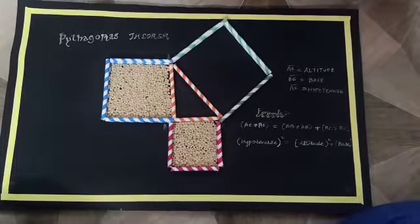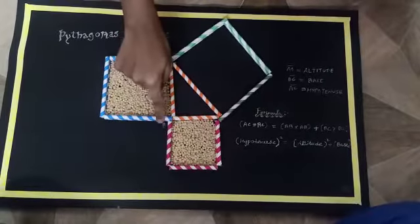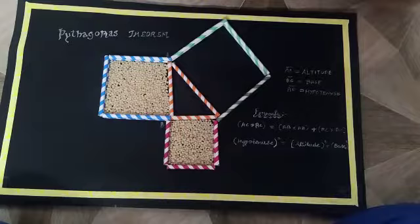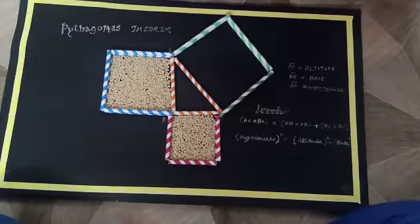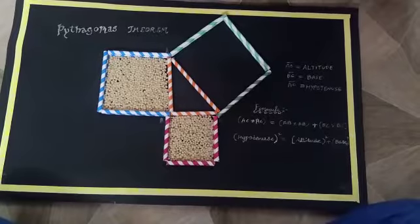We all know that AB² + BC² = AC², that is altitude squared plus base squared equals hypotenuse squared. Today I am going to prove that.